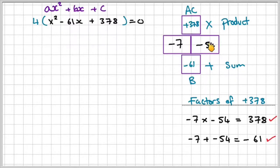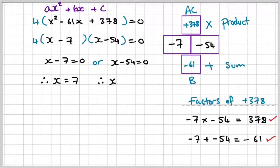Now I can use these two to write this quadratic in factor form. X minus 7 equals 0, therefore X equals 7, or X minus 54 equals 0, which means X is equal to 54.